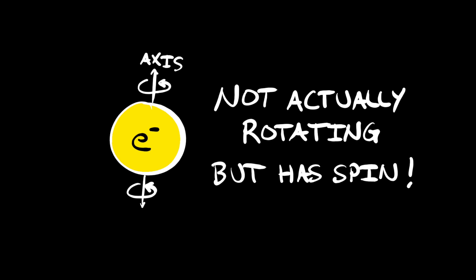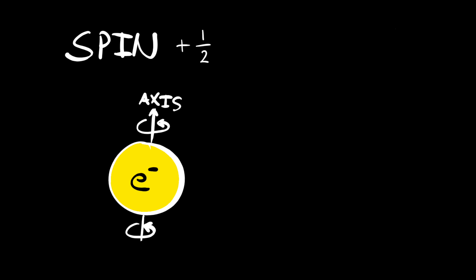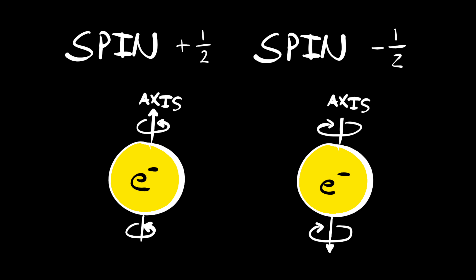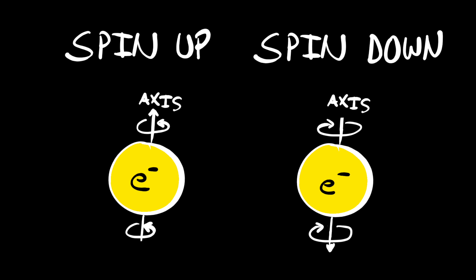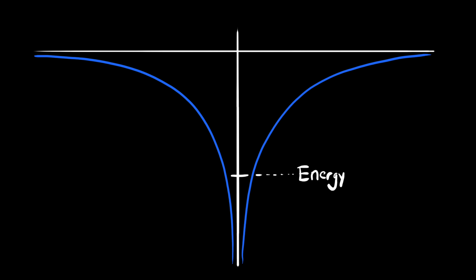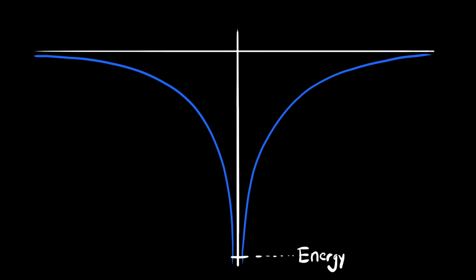Next, electrons have something called spin. For a classical particle, spin would be angular momentum from the particle spinning on its axis. But for quantum particles, the electron just has intrinsic angular momentum. The amount of angular momentum always takes one of two values — plus one-half or negative one-half — meaning the amount of spin is constant, but the direction can be up or down.